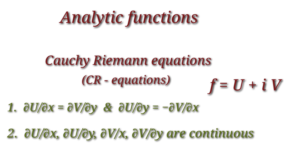In problems, first we express the given function f in the form u + iv, from which we write u and v. Next we find the partial derivatives ∂u/∂x, ∂u/∂y, ∂v/∂x, and ∂v/∂y. Then we check whether u and v satisfy the Cauchy-Riemann equations. If at least one CR equation is not satisfied, f is not analytic. If both are satisfied and the four partial derivatives are continuous, f is analytic.